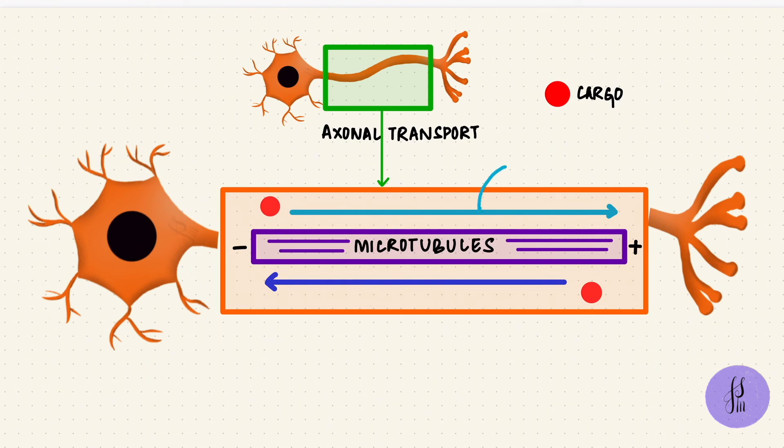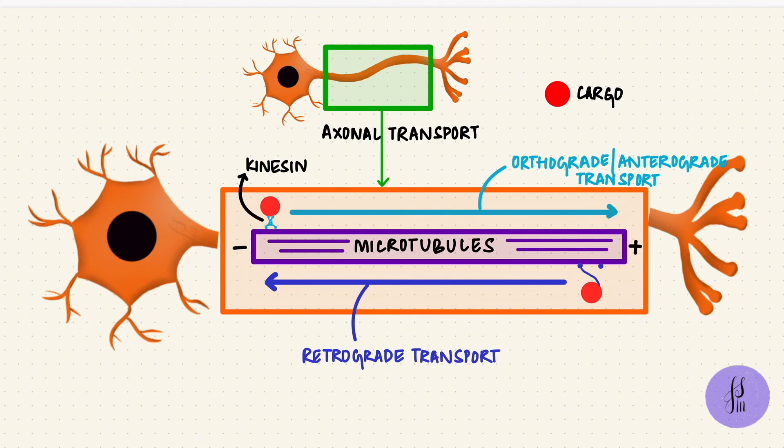Movement towards the synaptic terminal is orthograde or anterograde transport, and that uses kinesin from minus to plus. One end of kinesin would bind to the microtubule and the other end to the cargo. Retrograde transport is from the terminals to the cell body and that uses dynein from plus to minus. These are both ATPases, so they hydrolyze ATP and use that energy to move cargo in either direction. Kinesin for anterograde transport, dynein for retrograde transport.